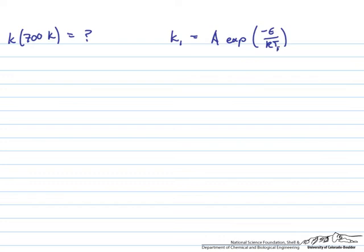We can write an additional expression: k2 is equal to the same A times the exponential of the same E and the same R over T2. Now what I'll do is divide these two expressions by each other. This should have been done in your textbook depending on what textbook you're using, but I'll show how this works.